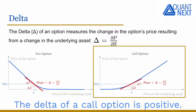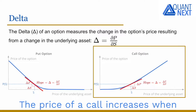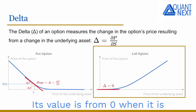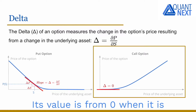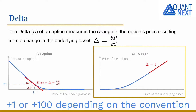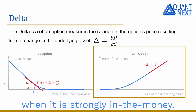The delta of a call option is positive. The price of a call increases when the underlying asset price goes up. Its value ranges from 0 when it is deeply out of the money, to plus 1 (or plus 100, depending on the convention) when it is strongly in the money.